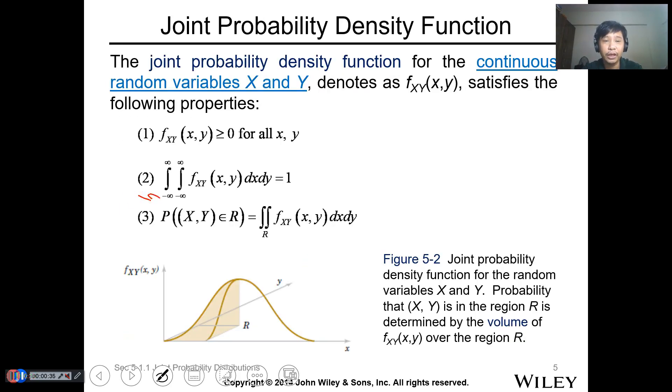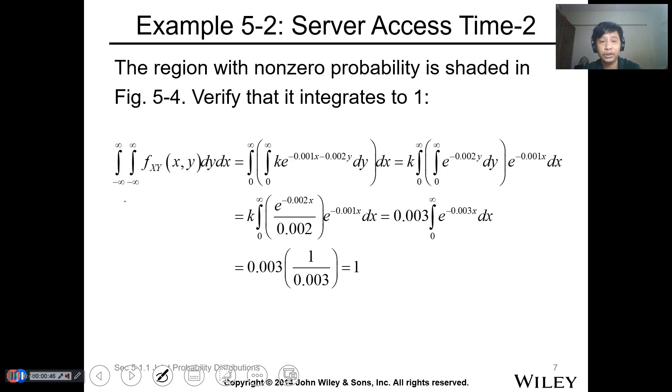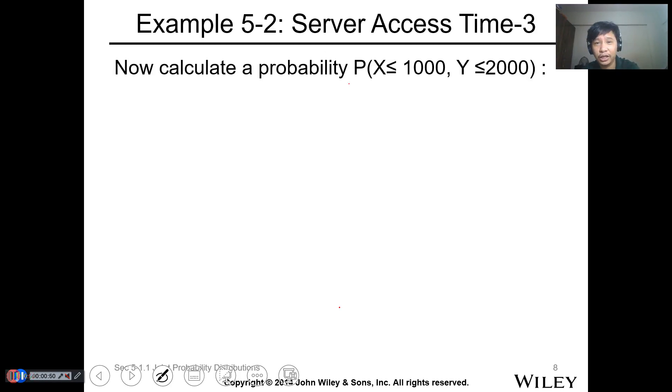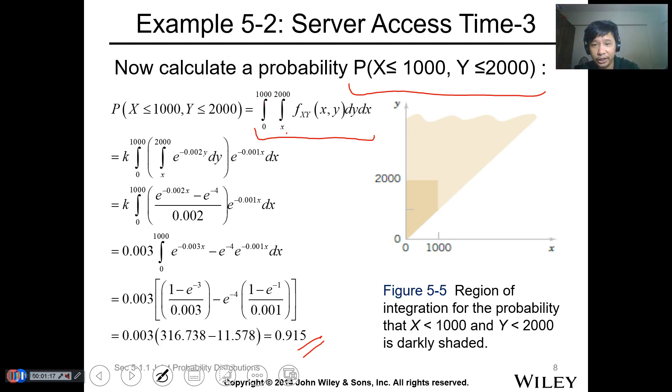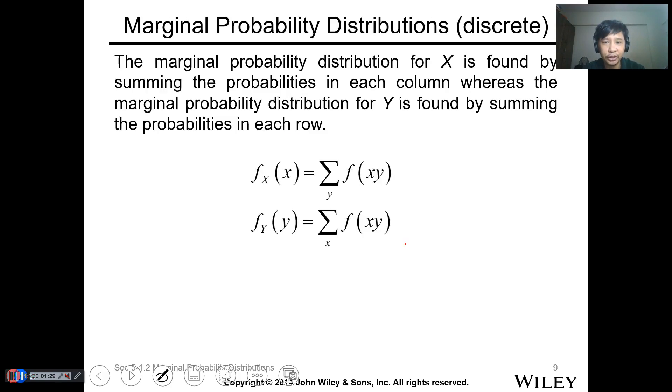involving two or more variables. We had this problem where we calculated the double integration from negative infinity to infinity of f(x,y) to verify it equals 1. Then we evaluated the probability when x is less than or equal to 1000 and y is less than or equal to 2000. We did the double integration from 0 to 1000 and from x to 2000 in terms of y value. The summation of that area was 0.915 of the total probability distribution.